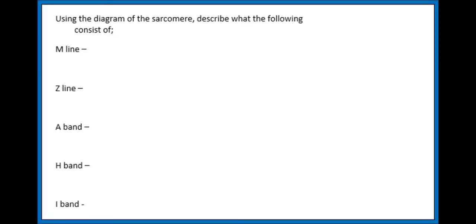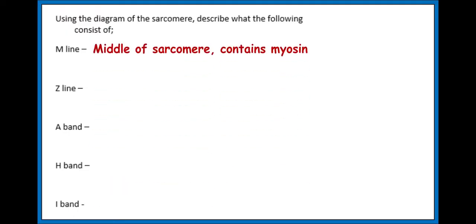You do need to know what is going on with the M line, Z line, A band, H band, and I band, and what each is made of. So pause the video and have a go at noting down what each is made of — actin, myosin, or both.